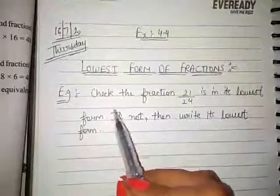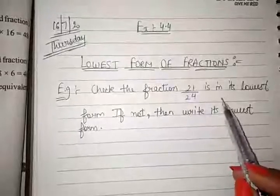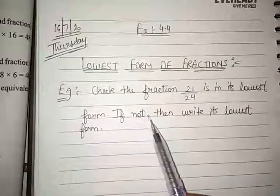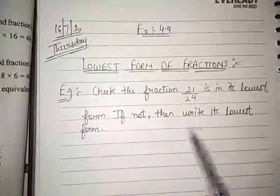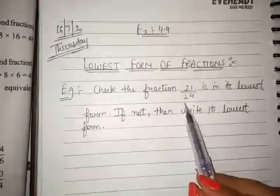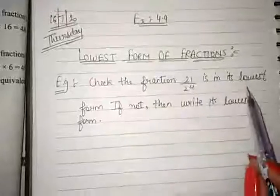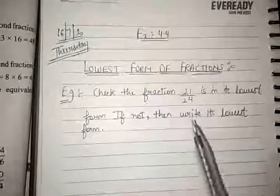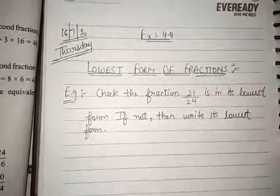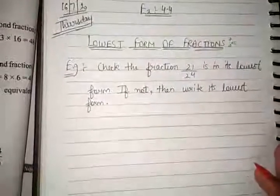Check whether the fraction 21 over 24 is in its lowest form. If not, then write its lowest form. We have the fraction 21 over 24. We have to check whether it is in the lowest form or not. First of all, let's identify our numerator and denominator.